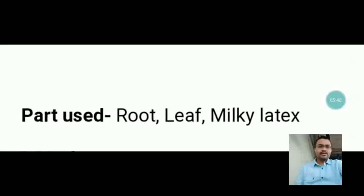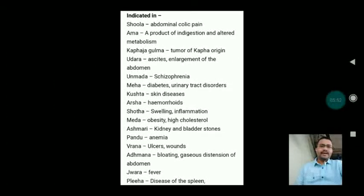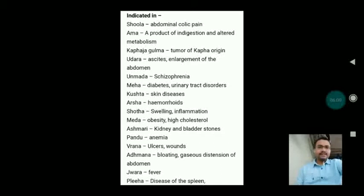Parts used are root, leaf, and milky latex. It is indicated in Shula (abdominal colic pain), Ama (a product of indigestion and altered metabolism), Kapha-ja Gulma (tumor of Kapha origin), Udara (ascites and enlargement of the abdomen), Unmada (schizophrenia), Meha (diabetes and urinary tract disorders), Kushtha (skin diseases), Arsha (hemorrhoids), Shopha (swelling and inflammation), Medoroga (obesity and high cholesterol), Ashmari (kidney and bladder stones), Pandu (anemia), Vrana (ulcers and wounds), Adhmana (bloating and gaseous distension of abdomen), Jwara (fever), and Pliha (diseases of the spleen, especially splenomegaly).